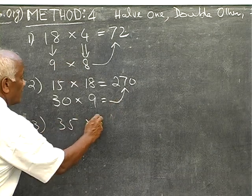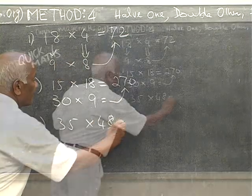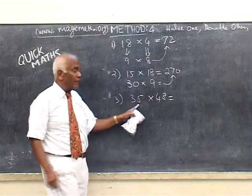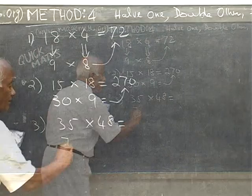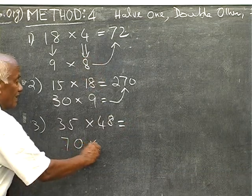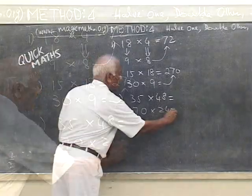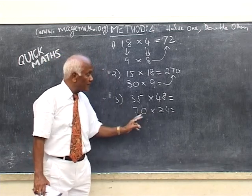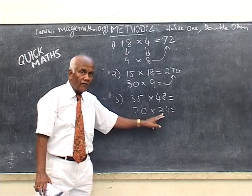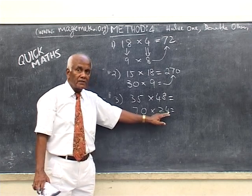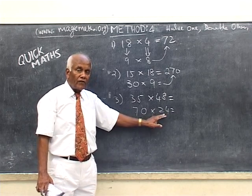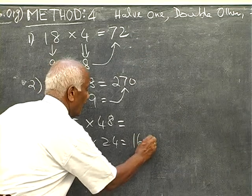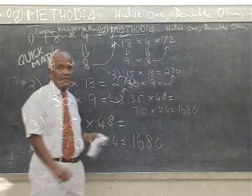So we can do such sums very fast now. Say 35 into 48. 35 is a 5 ending number. It is a good number for doubling. So you double it, it becomes 70. It is only 7 and this is 24. Now you can use the first method. Multiply 24 by 7 from left. 7 2's, 140. 7 4's, 28. 140 plus 28, 168. Add the 0. Finished. It is easy.